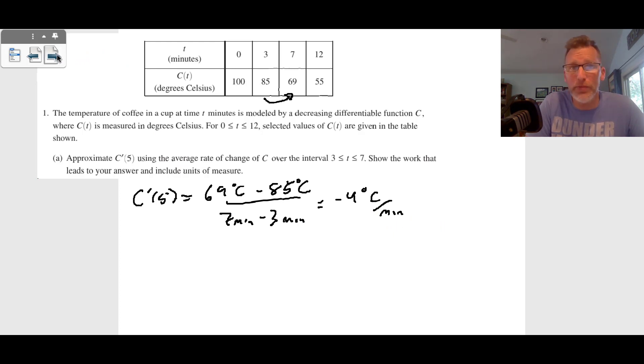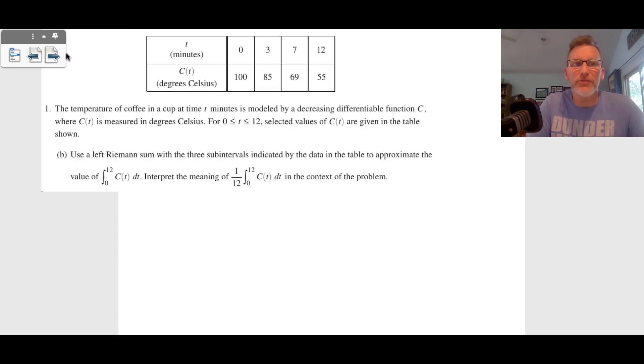So that was A, just a slope of the degrees Celsius per minute. Then we go to B, and B is asking for a left-hand Riemann sum. And so when we're doing the integral from zero to 12 of C of T, DT, using a left-hand Riemann sum,